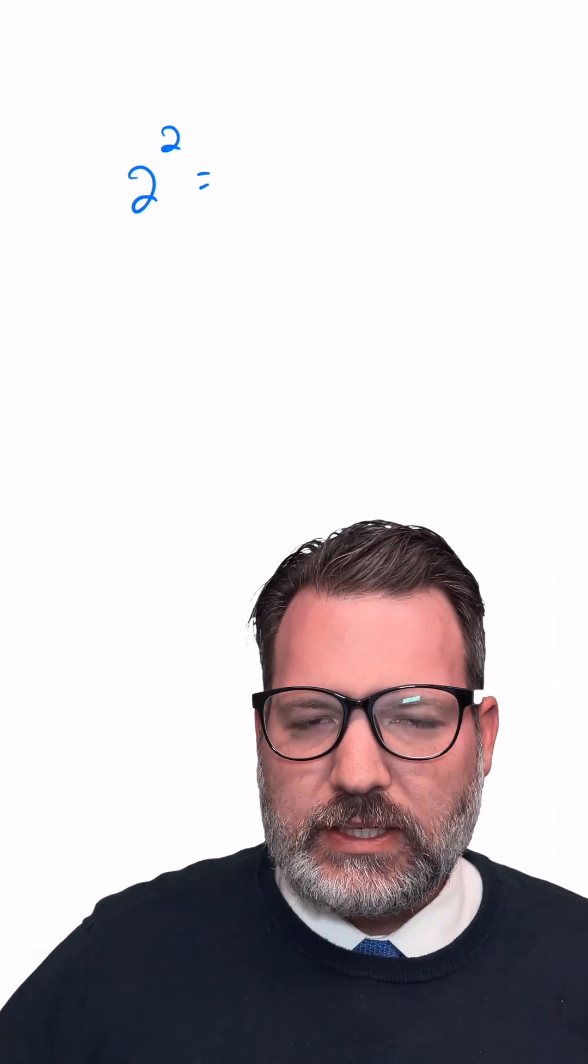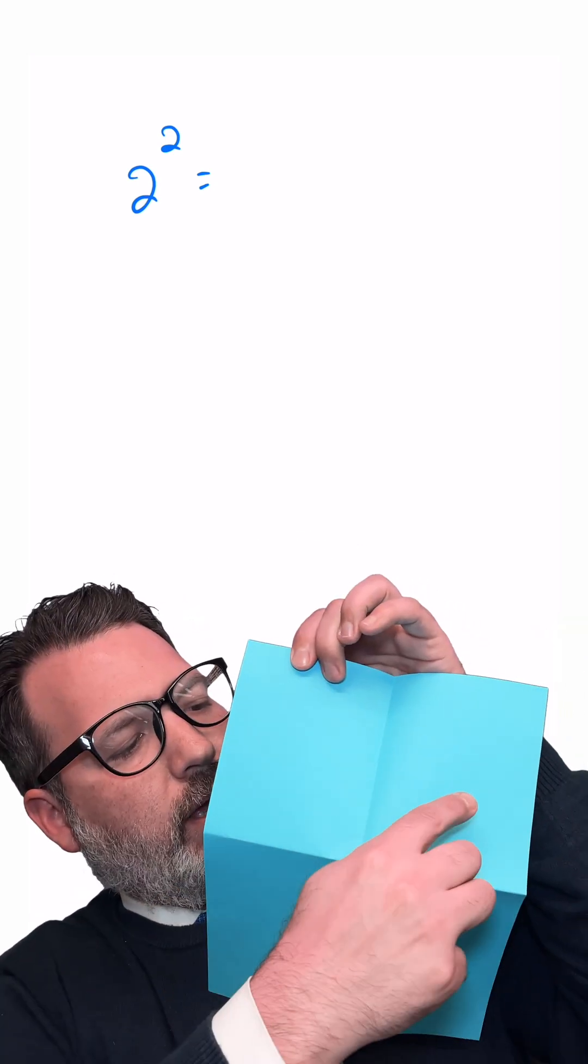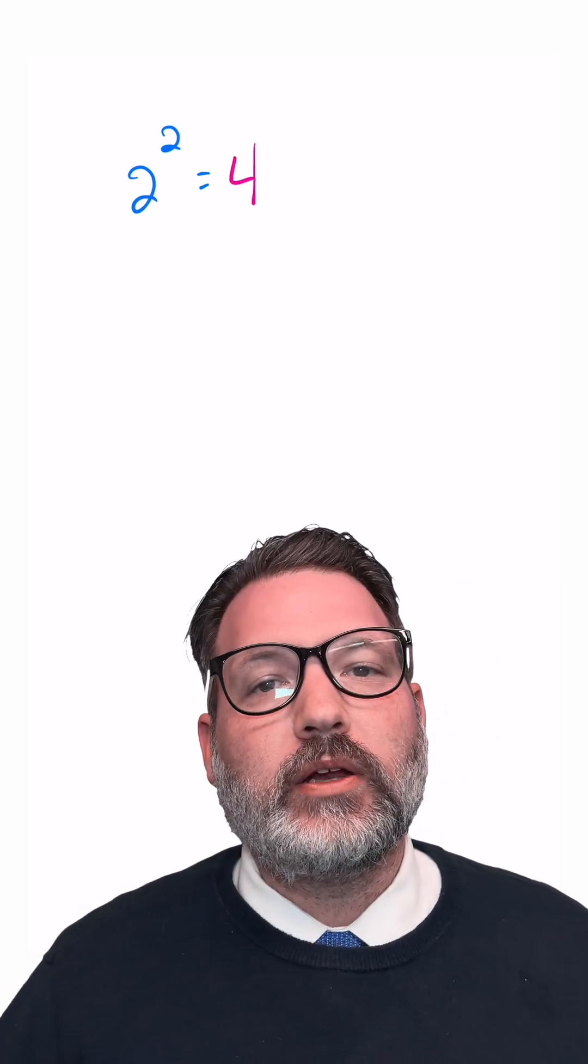We're going to let this stand for the idea of 2 squared, and as we unfold our piece of paper, we can count up 1, 2, 3, 4 different sections of the piece of paper. So we're going to say that 2 squared is 4.